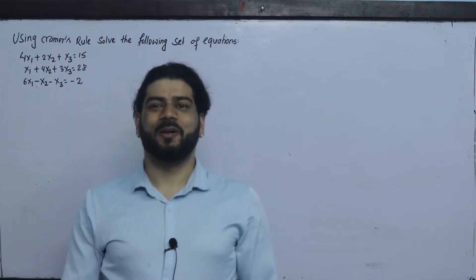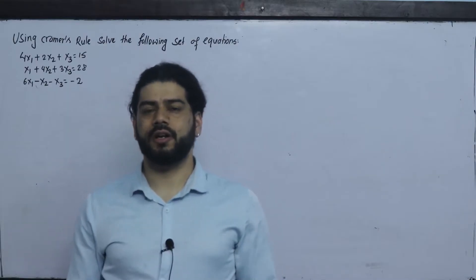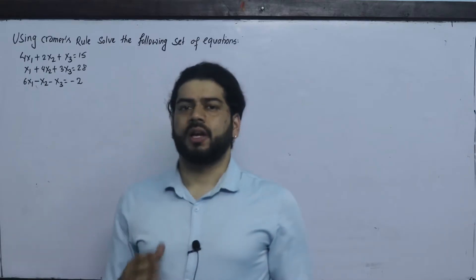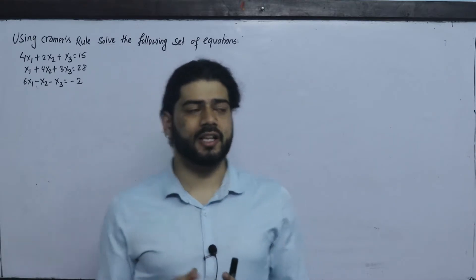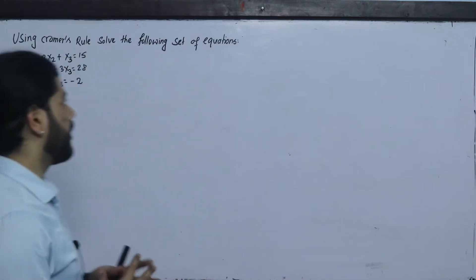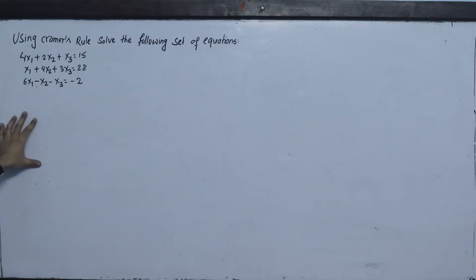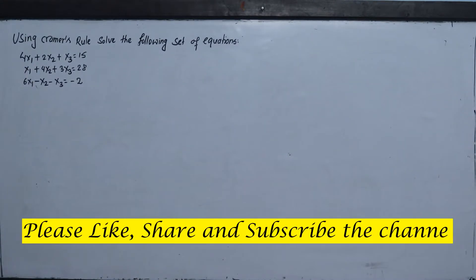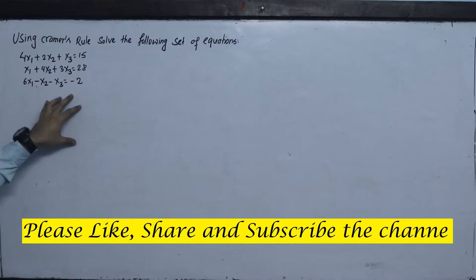Hello. In today's class, I'm going to solve this system of equations. The equations are: 4x1 plus 2x2 plus x3 equals 15; x1 plus 4x2 plus 3x3 equals 28; and 6x1 minus x2 minus x3 equals minus 2.